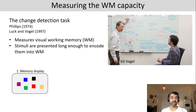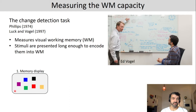One important feature of working memory is that it has a limited capacity, and the best way to measure working memory capacity is the so-called change detection task, initially used by Philips in 1974 and then popularized by Luck and Vogel in 1997. The change detection task measures visual working memory, and in this task stimuli are presented long enough to be encoded into working memory.